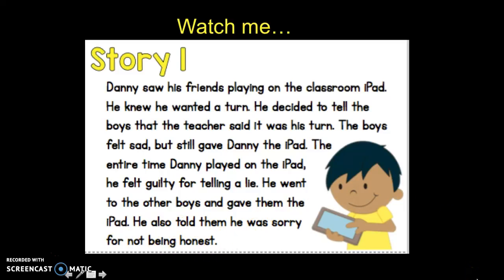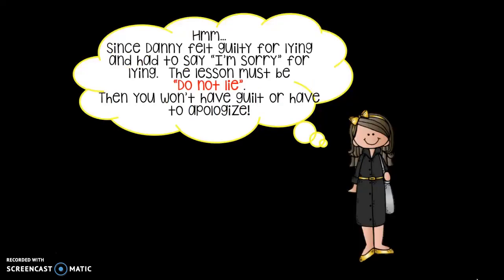As I was reading that, I was picking up on some clues that were helping me figure out the central message. One of them was that he felt guilty for telling a lie. The other one was that he had to tell them he was sorry. So after reading this I started to think: since Danny felt guilty for lying and had to say he was sorry, the lesson must be do not lie — then you won't have guilt or have to apologize.